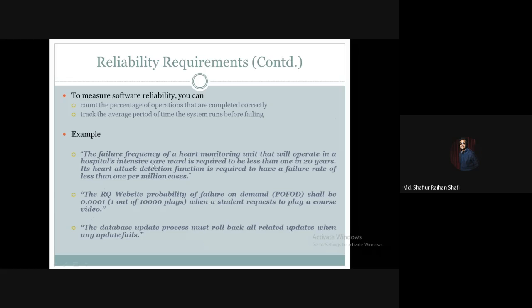Let's take a look at some examples of reliability requirements. Suppose, at a heart monitoring system, the failure frequency of the heart monitoring system unit that will operate in a hospital's intensive care ward is required to be less than 1 in 20 years. Its heart attack detection function is required to have a failure rate of less than 1 per million cases. If it crosses this threshold, the system will not be counted as reliable. These are reliability requirements.